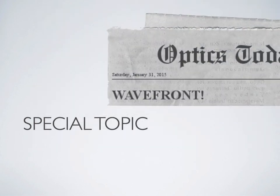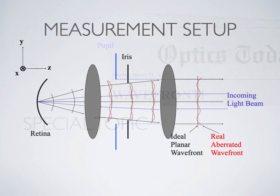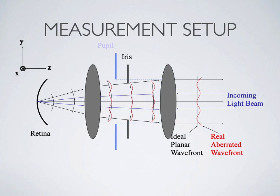Now we'll talk about wavefront — I have a four-part lecture series on topography and wavefront with much more detail, but I'll give you a sense here. If we illuminate one point on the retina, rays of light come out through the lens, pupil, and cornea. If the system were optically perfect and the patient emmetropic, the wavefront — this front of photons — would be planar. But eyes are not optically perfect, so that planar wavefront is bumpy.